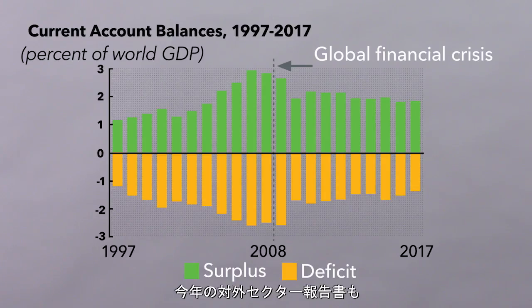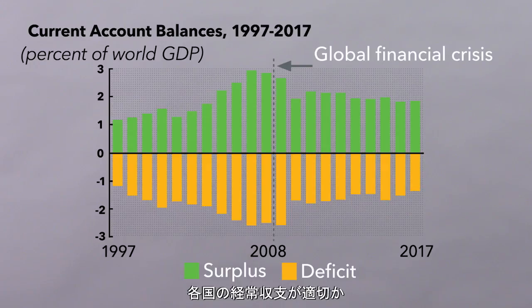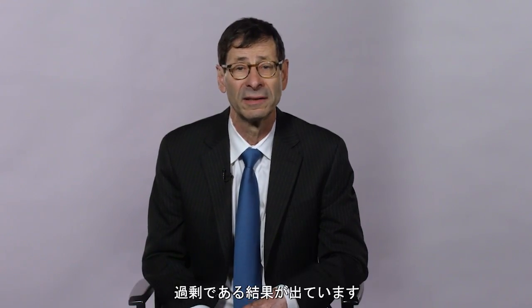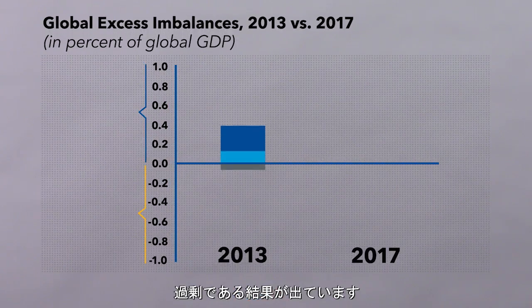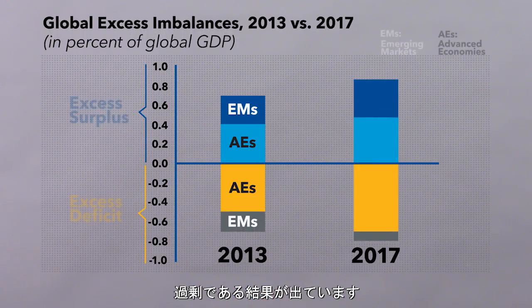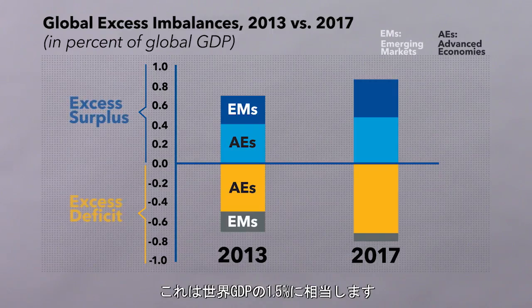Our annual external sector report provides the IMF's view on whether external balances are appropriate or excessive. In our latest assessment, we find that about half of the global current account balances, amounting to about one and a half percent of world GDP, are now deemed excessive.